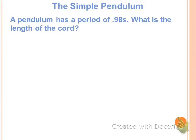All right, let's try another one here. This pendulum has a period of 0.98. Now we want to solve for the length of the chord. So this algebraically takes a little bit more work than the previous problem.